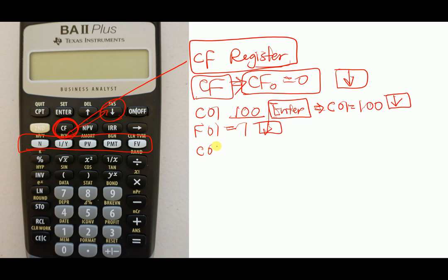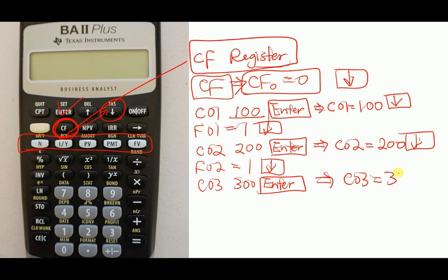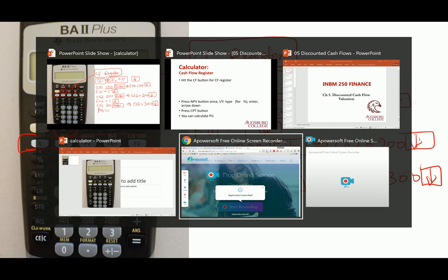C01 is now equal to $100. Press down to get F01, which is the frequency of that cash flow. Since we have different amounts each year, $100 occurs just one time, so leave F01 as 1. Continue down: C02 equals $200, F02 equals 1; C03 equals $300, and confirm F03 equals 1.